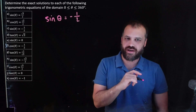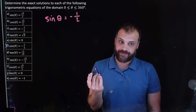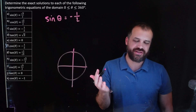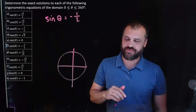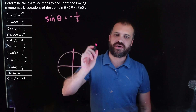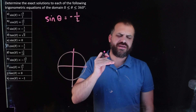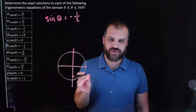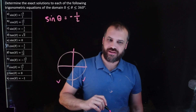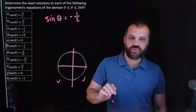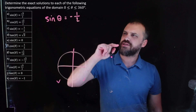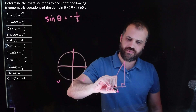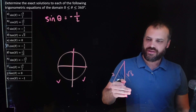Sin θ = -1/2. First step: draw a circle. Sine is the y-coordinate of the dot, and where is the y-coordinate negative? In quadrant three and in quadrant four. Where have we seen sine = 1/2? In the 1-2-root-3 triangle. Sine is opposite over hypotenuse, so it must be the 30-degree angle. We draw 30-degree angles in our third and fourth quadrants.